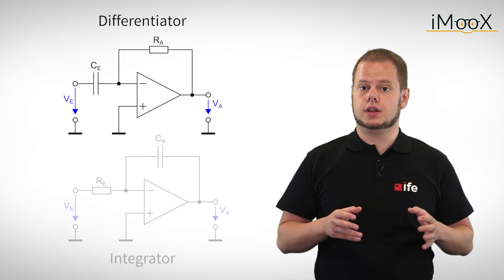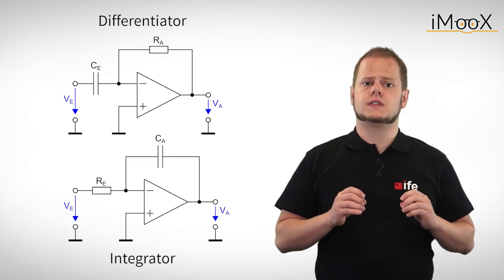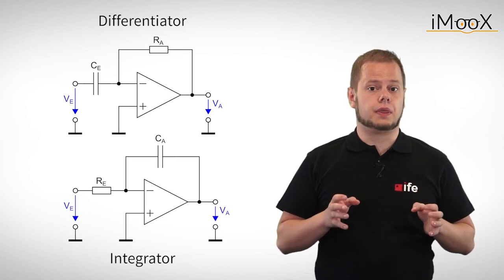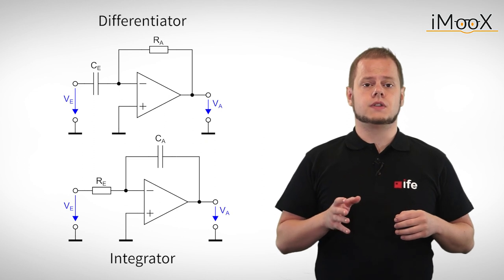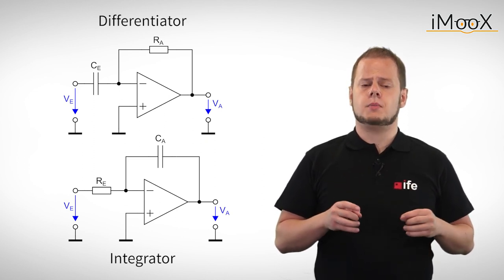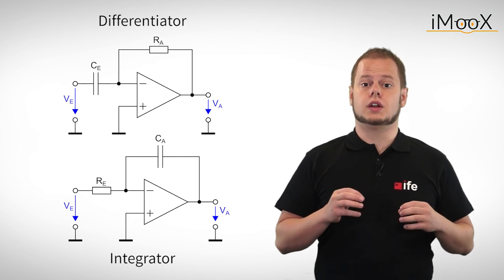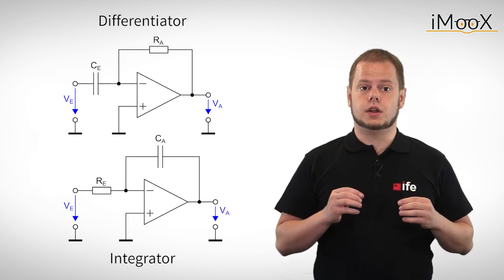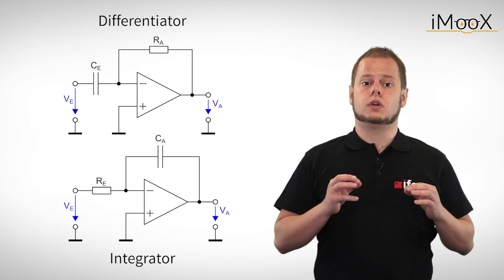These were the principal circuits for the differentiator and integrator. Note that these circuits do not work as intended if you build them. Non-ideal components and other influences cause the circuits to malfunction. Some alterations are required in order to get a working differentiator or integrator. But the underlying circuit stays the same.